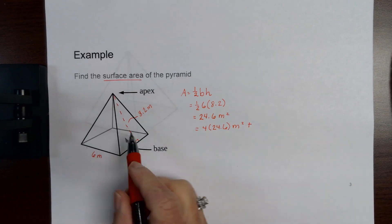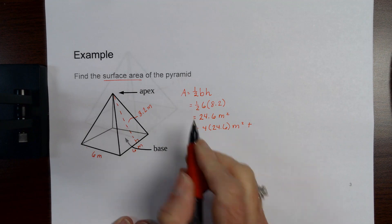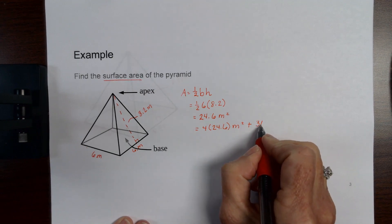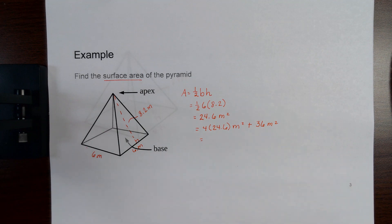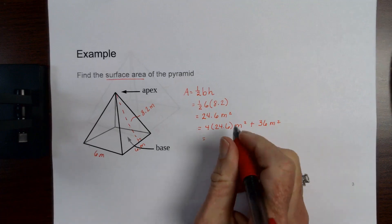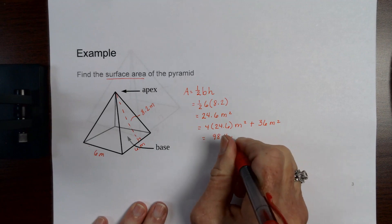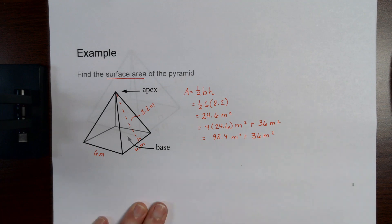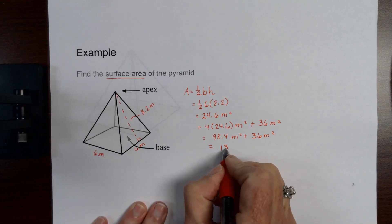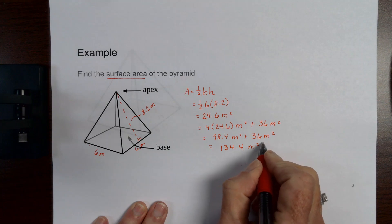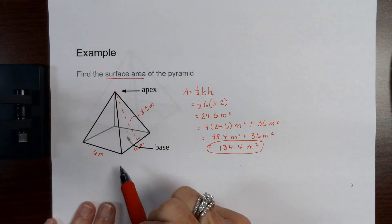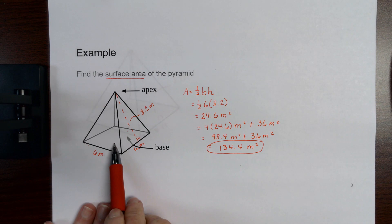Plus I have to find the area of my base. Since this is six, the base is also six, so six times six, length times width, is 36 meters squared. To find the total surface area: four times 24.6 is 98.4 meters squared, plus the area of the base which is 36 meters squared, giving a total surface area of 134.4 meters squared. That's the area of the four triangles — the lateral area — plus the area of the base.